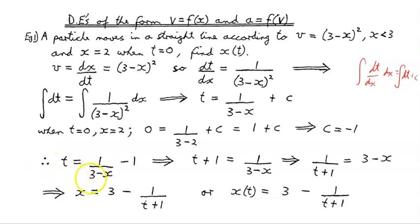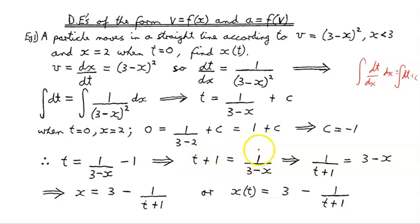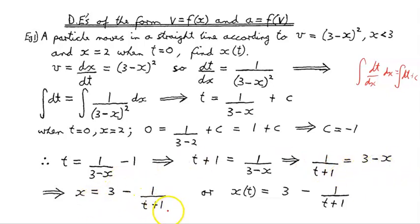That gives us t equals 1 on (3 minus x) minus 1. That's time as a function of position, but we were asked for position as a function of time. Adding 1 to both sides: t plus 1 equals 1 on (3 minus x). Taking the reciprocal: 1 on (t plus 1) equals 3 minus x. Rearranging, x equals 3 minus 1 on (t plus 1).